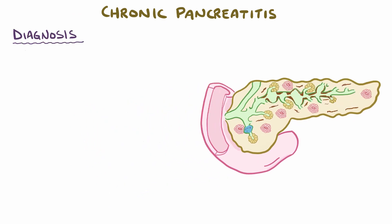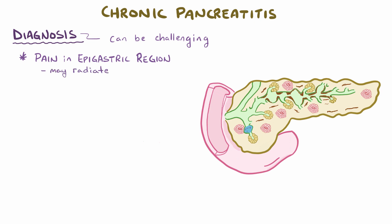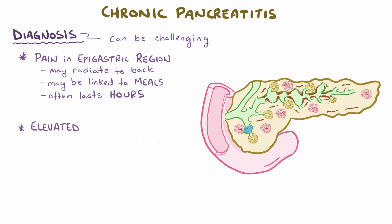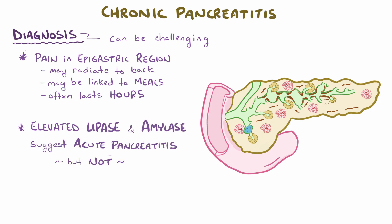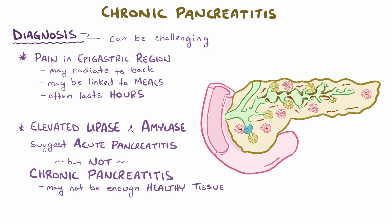Early diagnosis of chronic pancreatitis is challenging. People with chronic pancreatitis often have continuous or intense intermittent abdominal pain in the epigastric region that sometimes radiates to the back. This pain may or may not be linked to eating meals, and it tends to last for at least several hours. Even though elevated lipase and amylase levels are suggestive of acute pancreatitis, in chronic pancreatitis there may not be enough healthy pancreatic tissue to produce those enzymes, so levels may or may not be elevated.